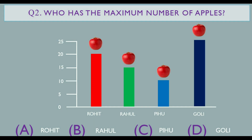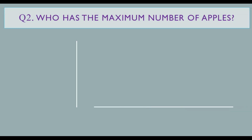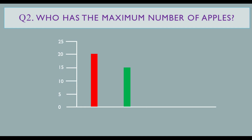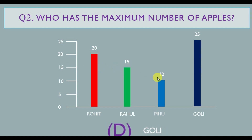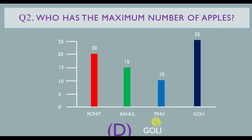Now I will tell you the answer. Looking at the graph: Rohit has 20%, Rahul has 15%, Bebo has 10%, and Goli has 25%. So the answer is Goli — it has the maximum number of apples.